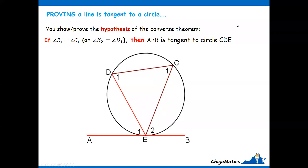To prove a line is tangent to your circle, you need to prove the hypothesis of the converse theorem, which simply states that if E1 equals C1, E2 equals D1, then you can conclude that AEB is tangent to circle CDE.